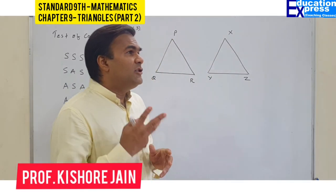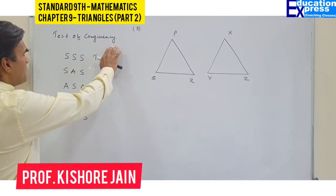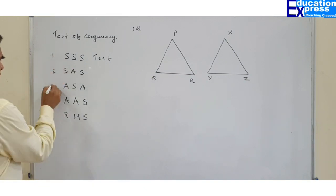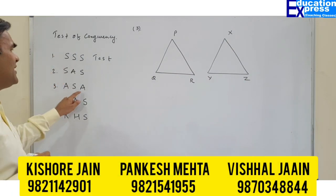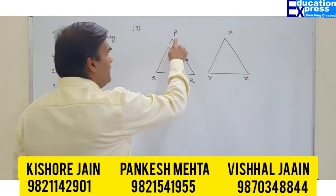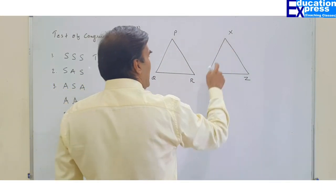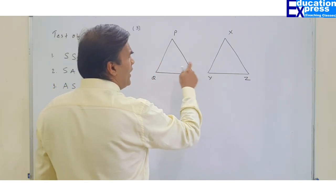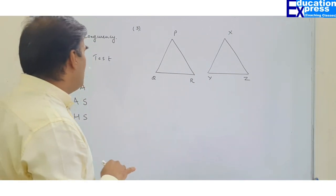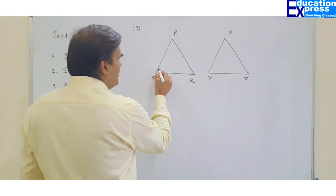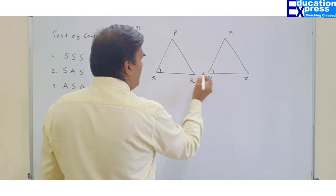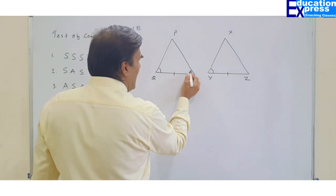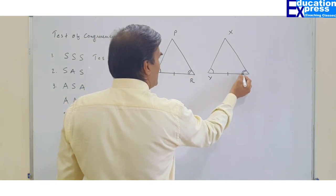As far as the third test of congruency is concerned, we have already done SSS and SAS. The third is Angle-Side-Angle. Now let us see triangle PQR and triangle XYZ. I am interested in proving that these two triangles are congruent. Any information given to us? Yes: this angle equals this angle, this side equals this side, and this angle is congruent to this angle.